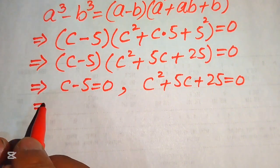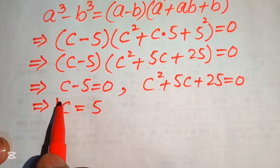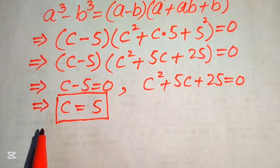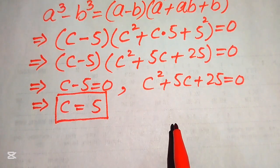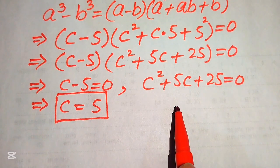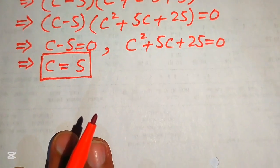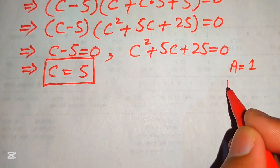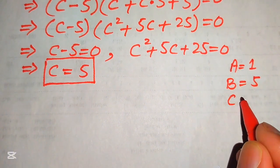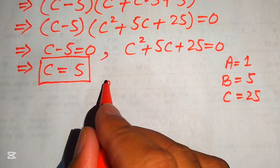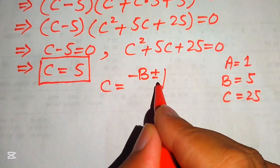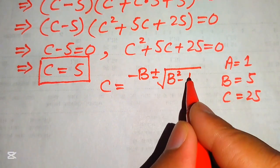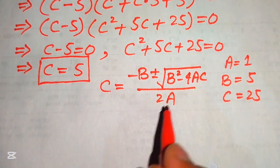From the first case we easily get c equals to 5 — this is our first real solution. To find the other solutions, we solve the quadratic equation c squared plus 5c plus 25 equals to 0 using the quadratic formula. The coefficients are: A equals 1, B equals 5, and C equals 25. The quadratic formula is: c equals minus B plus or minus square root of (B squared minus 4AC), all divided by 2A.